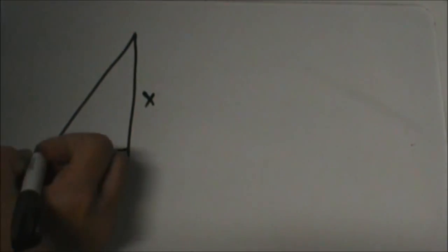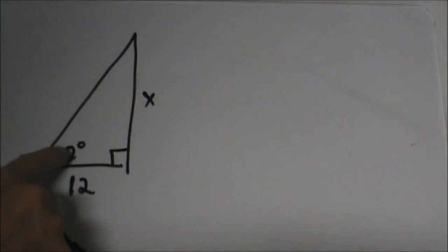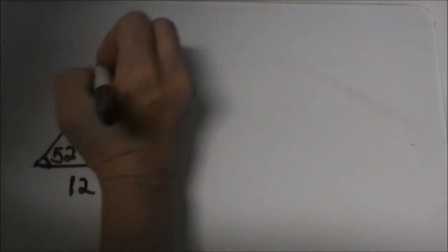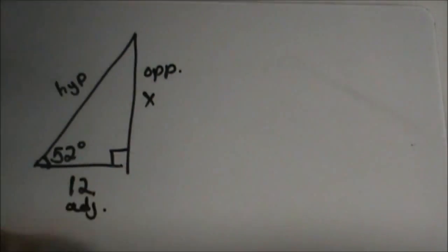We want to use this 52 degree angle as our reference angle. So from this 52 degree angle, this side is the opposite, this side is the hypotenuse, so that means the side that's labeled 12 is my adjacent side.